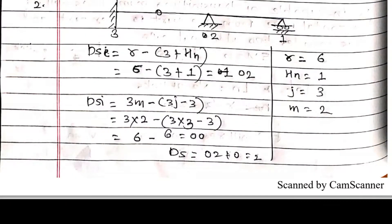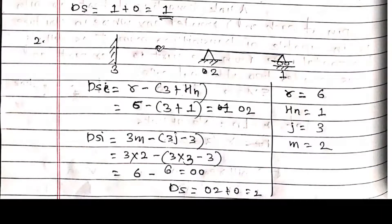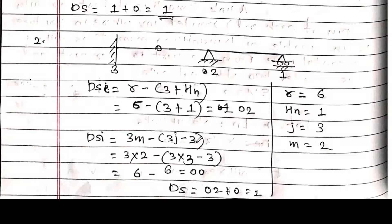For the second beam with an internal hinge: DSE formula is R minus (3 + HN). Members = 2, joints = 3, HN = 1, R = 6. Substituting: DSE = 6 minus (3 + 1) = 2. DSI = 3×2 minus (3×3 minus 3) = 6 minus 6 = 0. Total degree of static indeterminacy = 2 + 0 = 2.